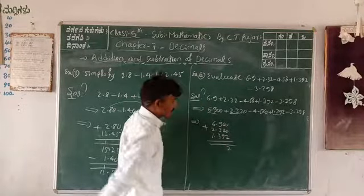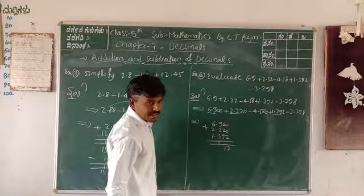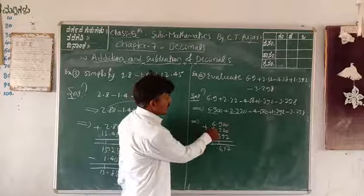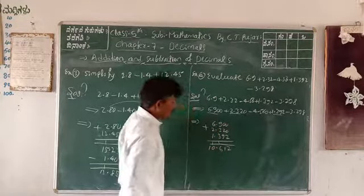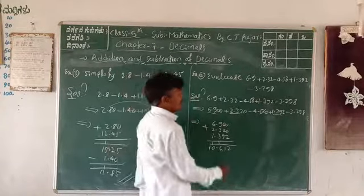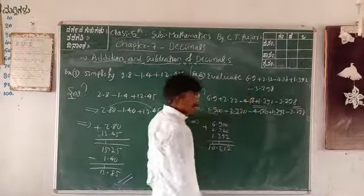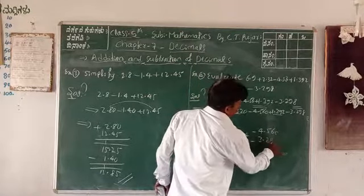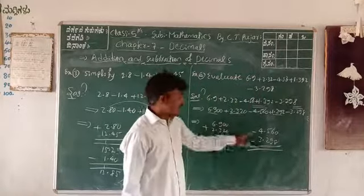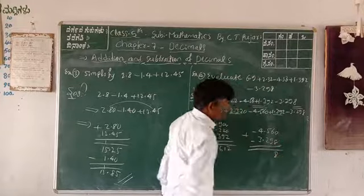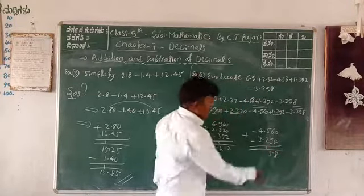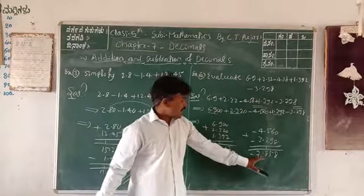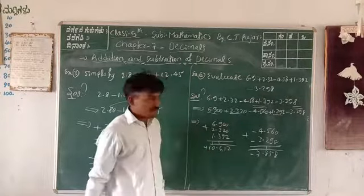Adding positives: 0+0+2=2; 0+2+9=11, carry 1; 9+1+3+1=14, carry 1; 3+3+1=7 — no wait: 6+2+1=9, carry: answer is 10.612. Now add the negative numbers: 4.560 + 3.298.